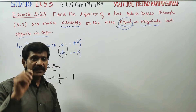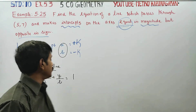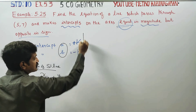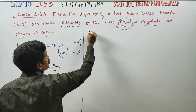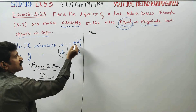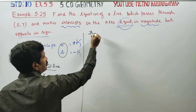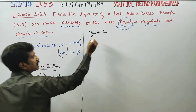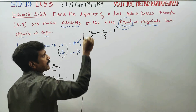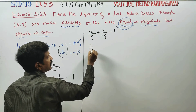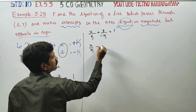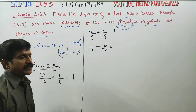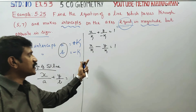The intercept formula is: x by A plus y by B is equal to 1. Substituting A equals k and B equals minus k, we get x by k plus y by minus k is equal to 1.